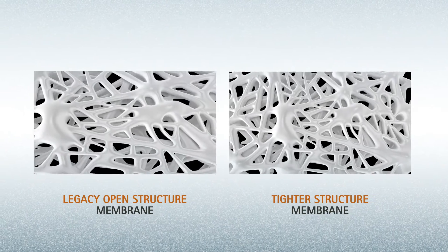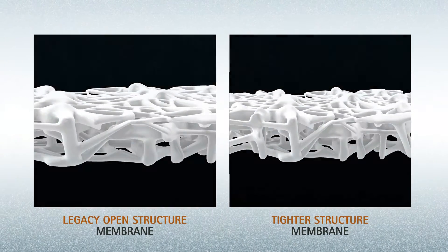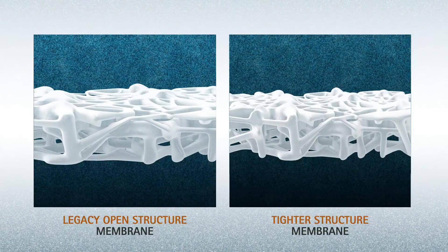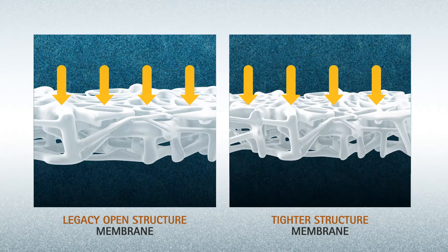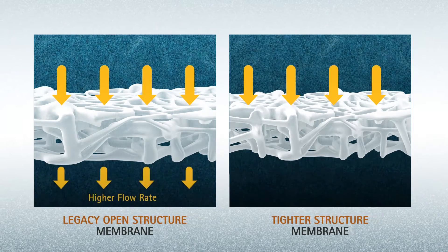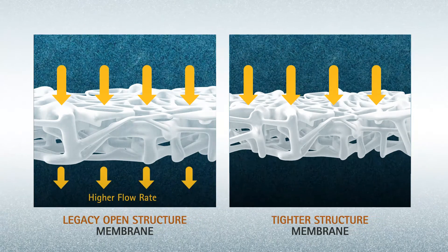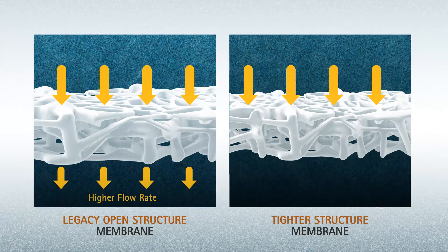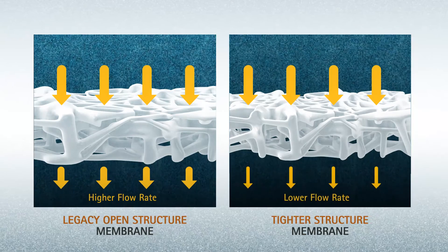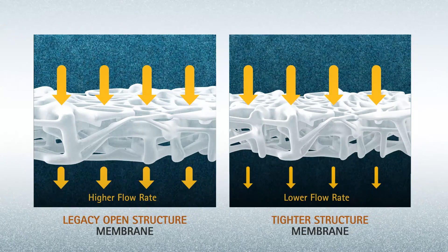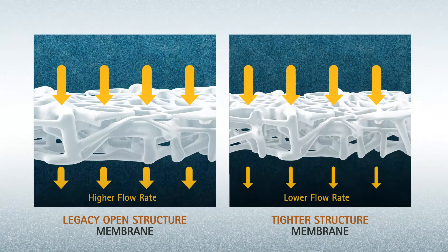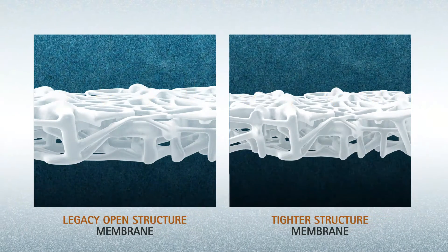A legacy filter with a more open physical membrane structure will provide a higher flow rate but removes fewer small contaminants. Tightening the density of the structure removes more contaminants but reduces flow rate.